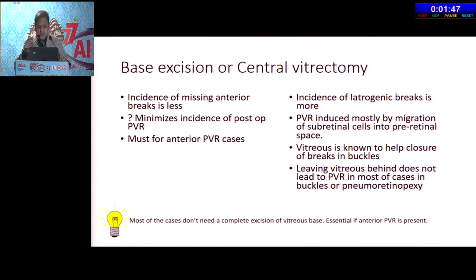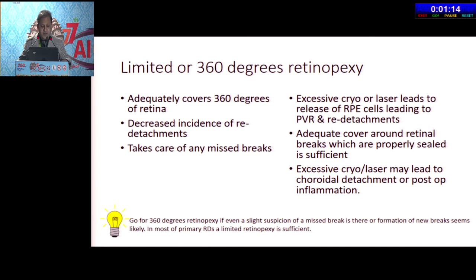In favor of central vitrectomy, some have put forward that PVR is induced mostly by migration of subretinal cells into the pre-retinal space, and not the vitreous left behind in the vitreous base. Vitreous is known to help closure of breaks in buckles, and leaving vitreous behind does not lead to PVR in most buckle or pneumoretinopexy cases. Most cases won't need complete excision of the vitreous base — it is essential only if anterior PVR is present. For 360-degree retinopexy, go for it if there is even a slight suspicion of a missed break or if formation of a new break seems likely. In most primary RDs, limited retinopexy is sufficient.